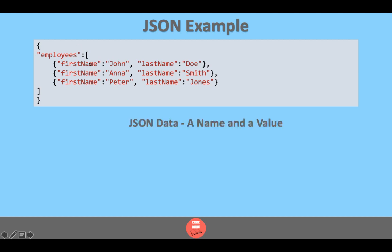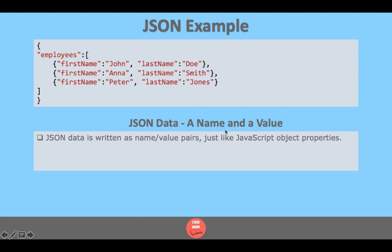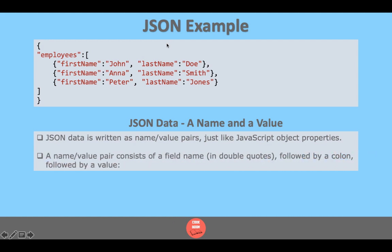JSON data is written as a name-value pair, just like a JavaScript object property — that is why it is called JavaScript Object Notation. A name-value pair consists of a field name in double quotes, followed by a colon, followed by a value. It is very simple, easy to use, handy, and lightweight.